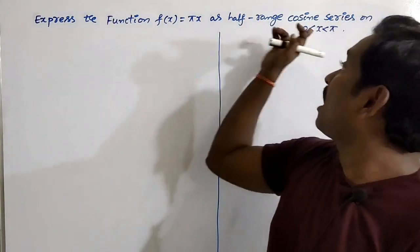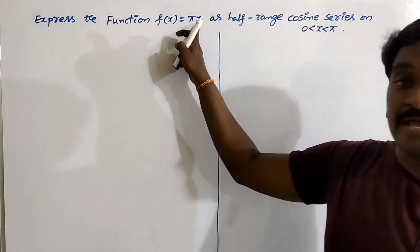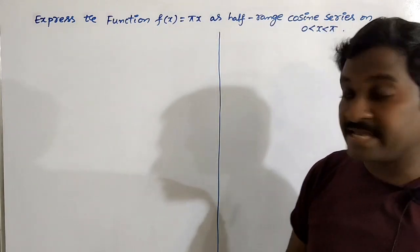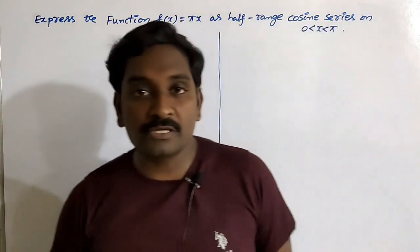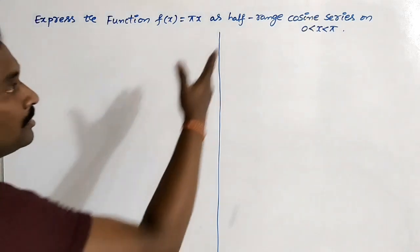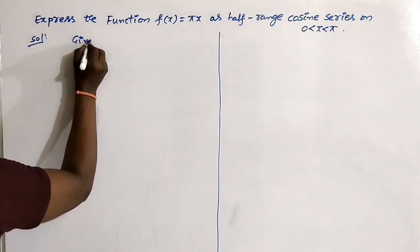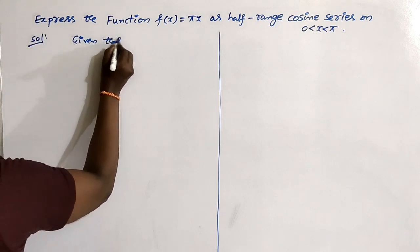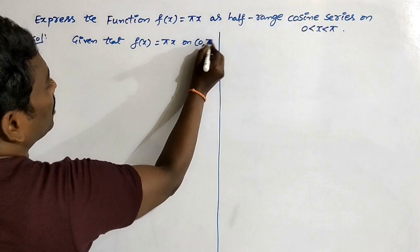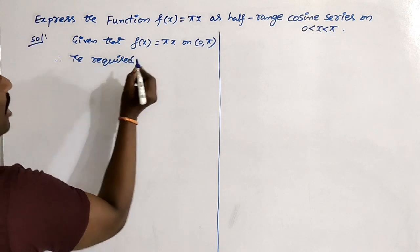This is the next problem on half-range cosine series. Express the function f(x) = πx as a half-range cosine series on the interval 0 to π. Here the interval length is π only, that's why we will get only half-range expansion. Particularly here we have a cosine series. Given that f(x) = πx on the open interval (0, π).